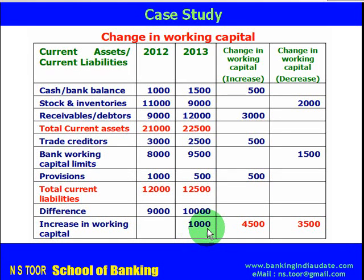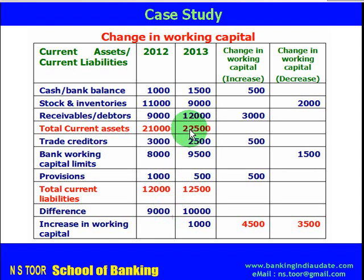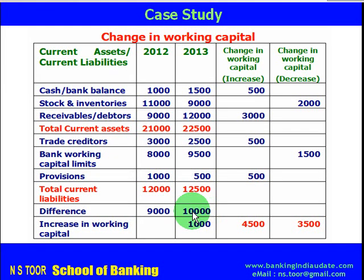This increase can be calculated from another angle. Current assets are 21,000 and current liabilities are 12,000, giving a difference of 9,000 for the prior year. For this year, current assets are 22,500 and current liabilities are 12,500, giving a difference of 10,000. The difference increased from 9,000 to 10,000, confirming an increase in working capital of 1,000. So first we calculate the change in working capital.